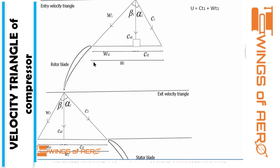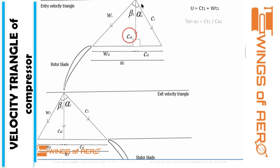First, look at the diagram. We have blade speed U. U is the sum of the tangential component of relative velocity and the tangential component of absolute velocity. The common term for both is CA — the axial component of absolute flow velocity. We bring both terms in terms of CA1, since this is region 1. Consider the triangle: the height is CT1 and the base is CA1, so tan(alpha1) = CT1 / CA1, giving CT1 = CA1 · tan(alpha1). Similarly, for the other triangle, tan(beta1) = WT1 / CA1, giving WT1 = CA1 · tan(beta1).